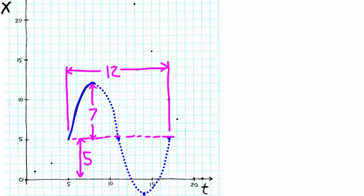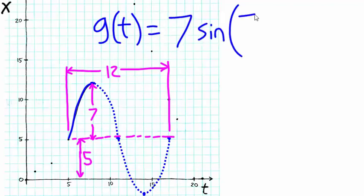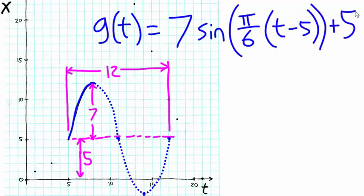Referring to the full unrestricted sinusoid as g of t, a skilled trigonometry or precalculus student should be able to derive an equation such as g of t equals 7 sine pi over 6 t minus 5 with a vertical translation up 5 units.